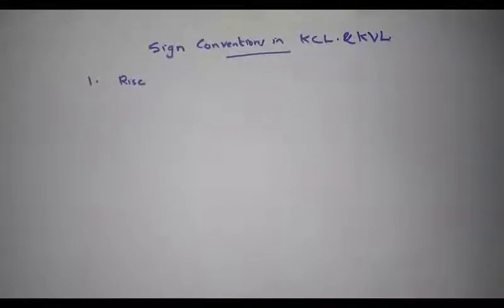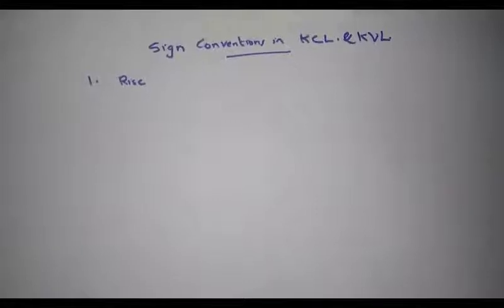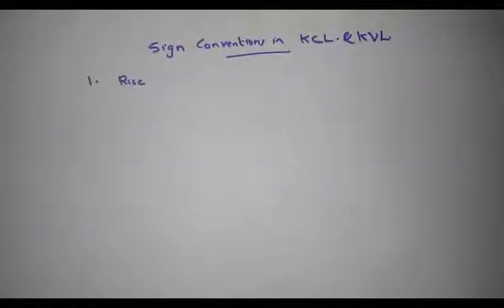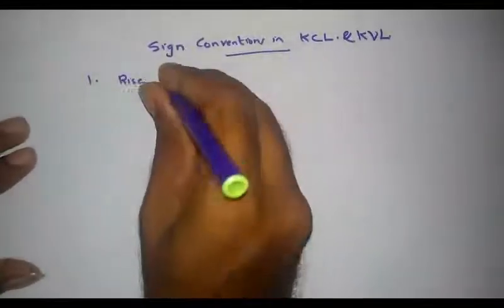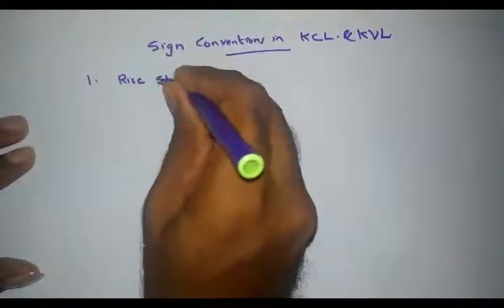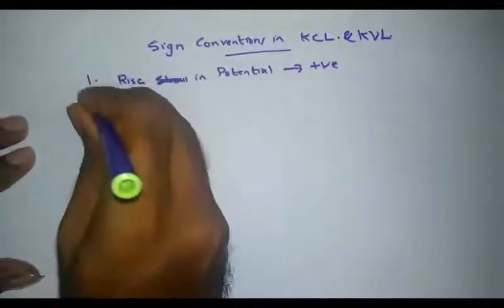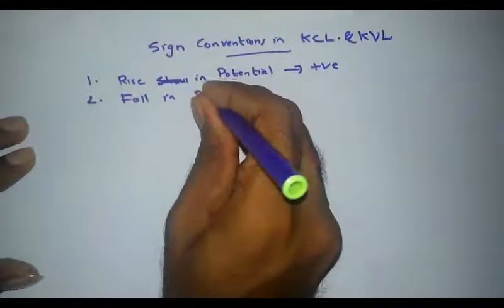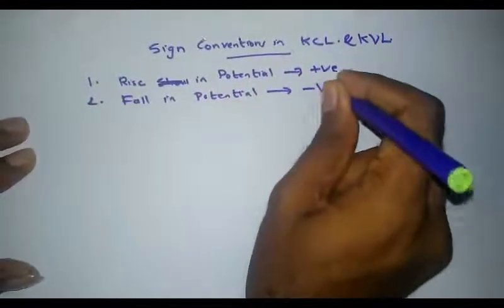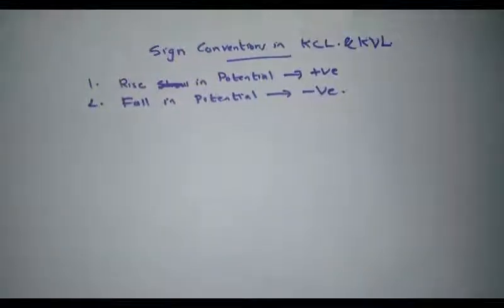In this section we are discussing the different sign rules to be followed for assigning signs to the different elements. The two important things that need to be remembered while assigning signs to circuit elements are: first, a rise in potential should always be considered as positive, and second, a fall in potential should always be considered as negative.